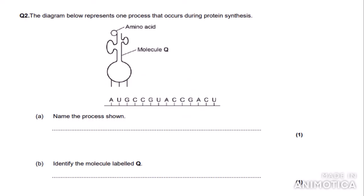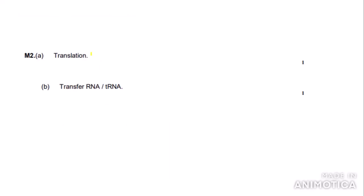The second exam question shows a diagram representing one process in protein synthesis. The first part asks you to name the process shown. The diagram contains an mRNA sequence with uracil instead of thymine, and a clover-shaped molecule with an amino acid attached — this is tRNA, which is involved in translation. So the process is translation. The molecule labelled Q is tRNA, or transfer RNA.